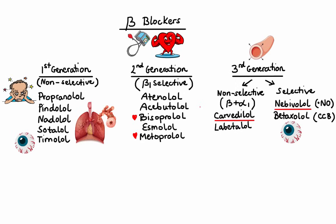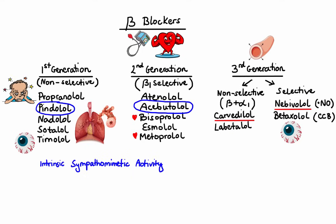Lastly, I wanted to briefly discuss intrinsic sympathomimetic activity of a couple of beta-blockers — namely pindolol and acebutolol. These two beta-blockers are special in that they have the ability to not only block, but also to weakly stimulate both beta-1 and beta-2 receptors, which leads to a diminished effect on cardiac rate and cardiac output. This intrinsic sympathomimetic activity can be beneficial in patients who cannot tolerate other beta-blockers because of pre-existing bradycardia or heart block.